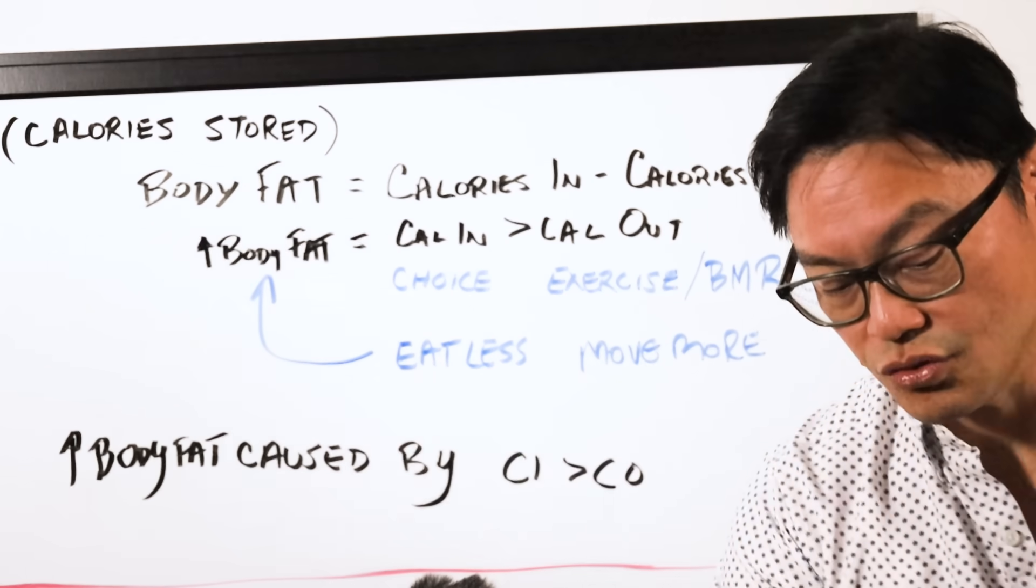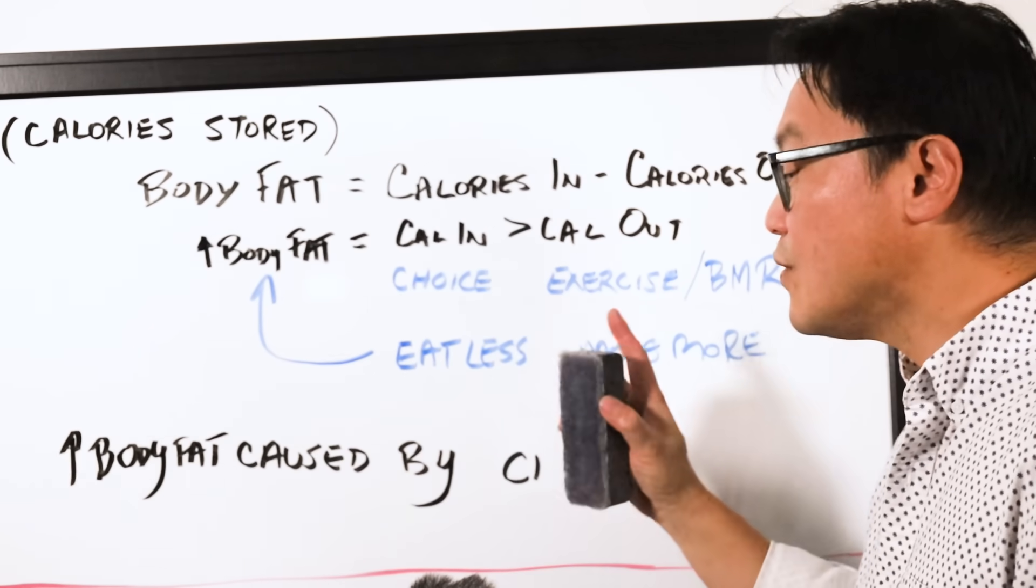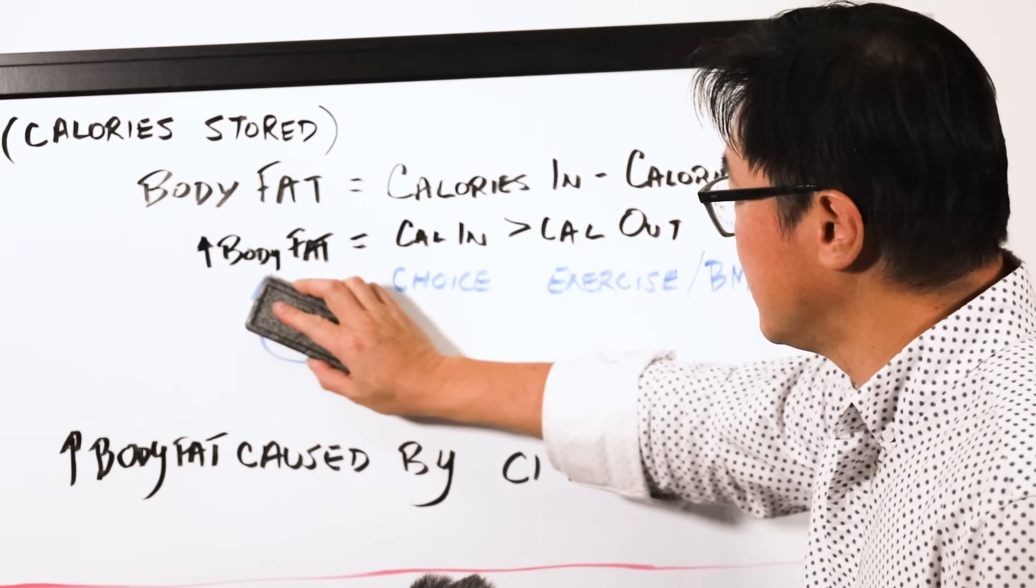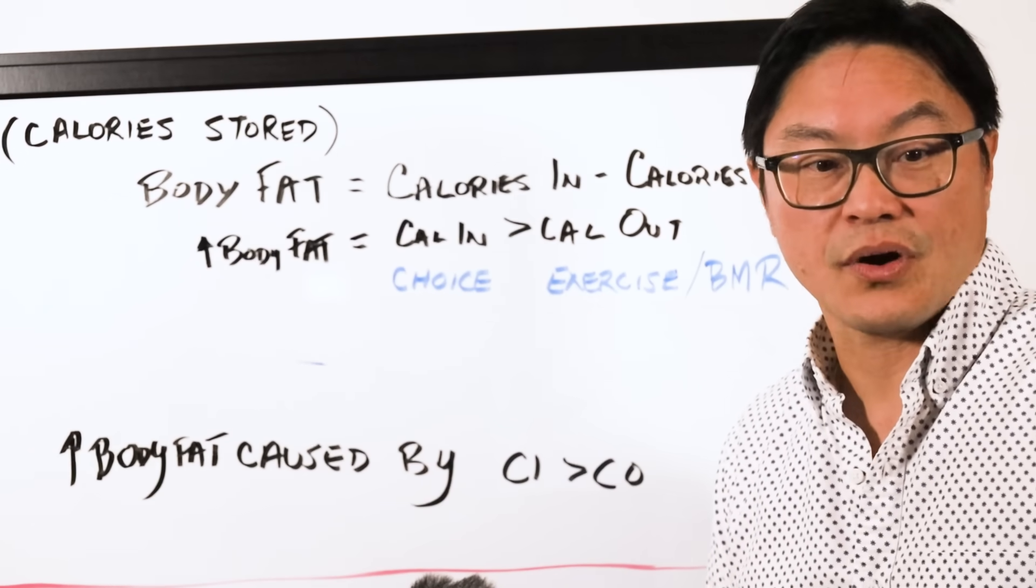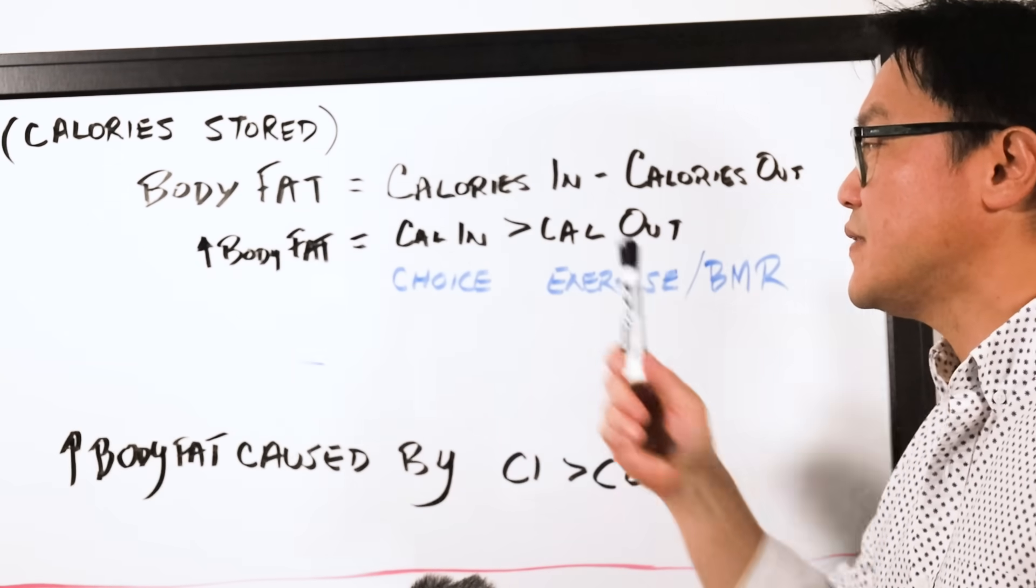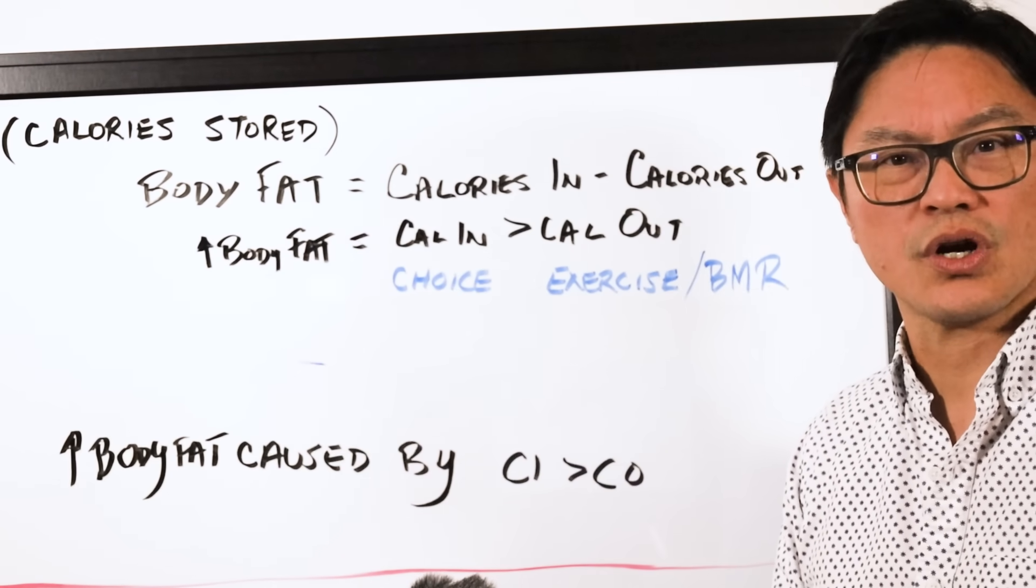This is not true. The arrow of causality does not go from the calories to the body fat. That's not how the body works. So at the same time, we know that this equation is true. So how does it work?